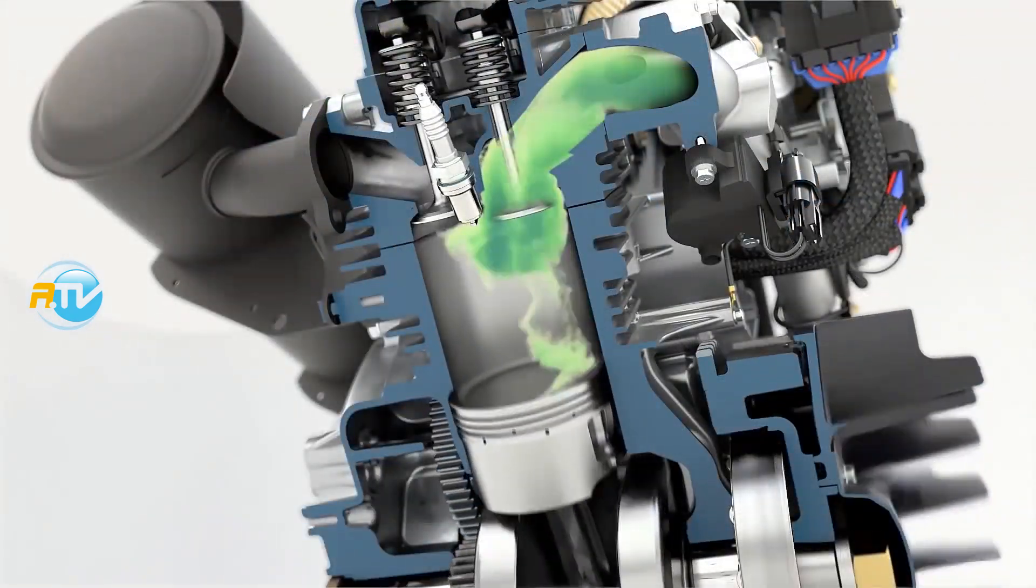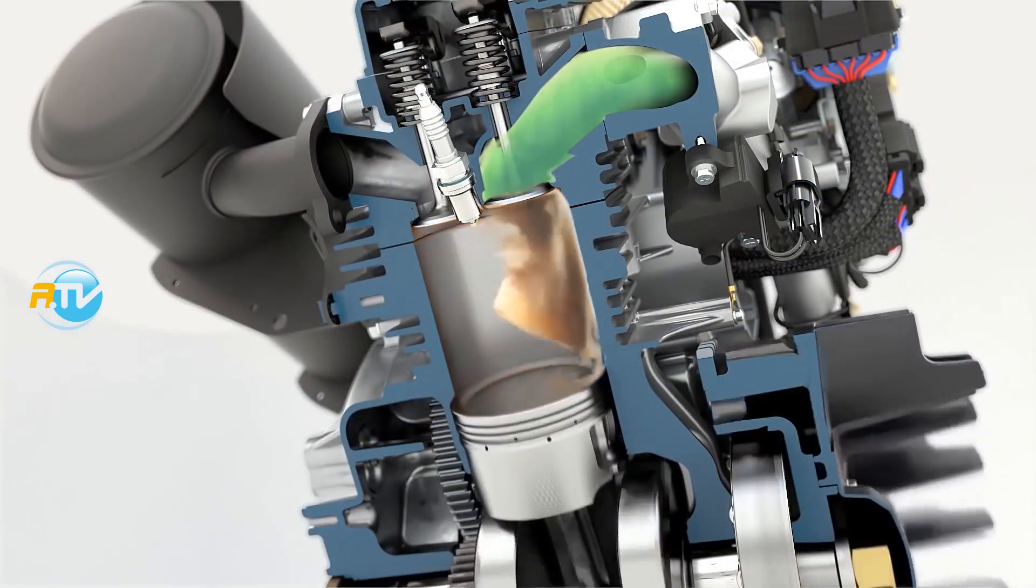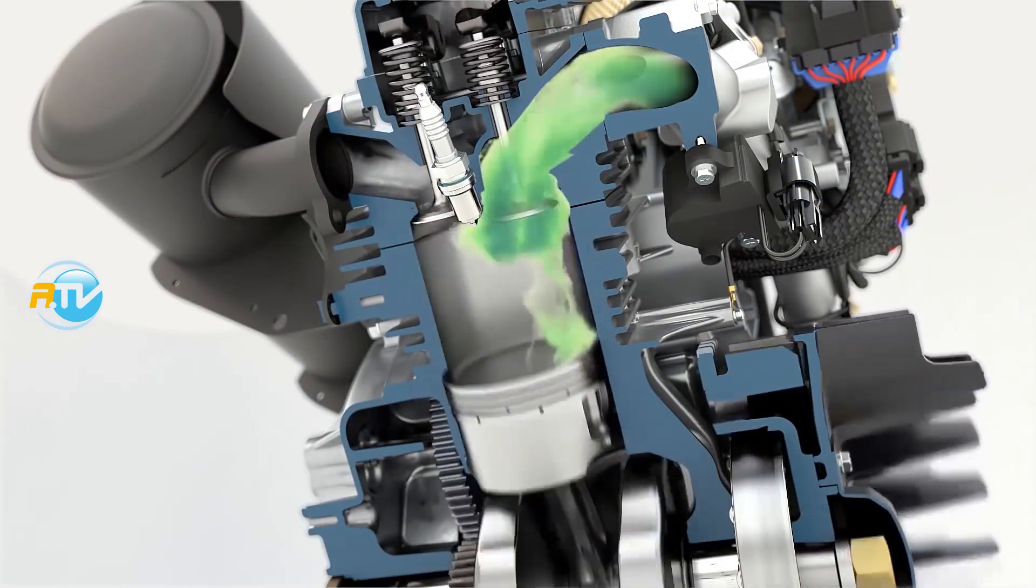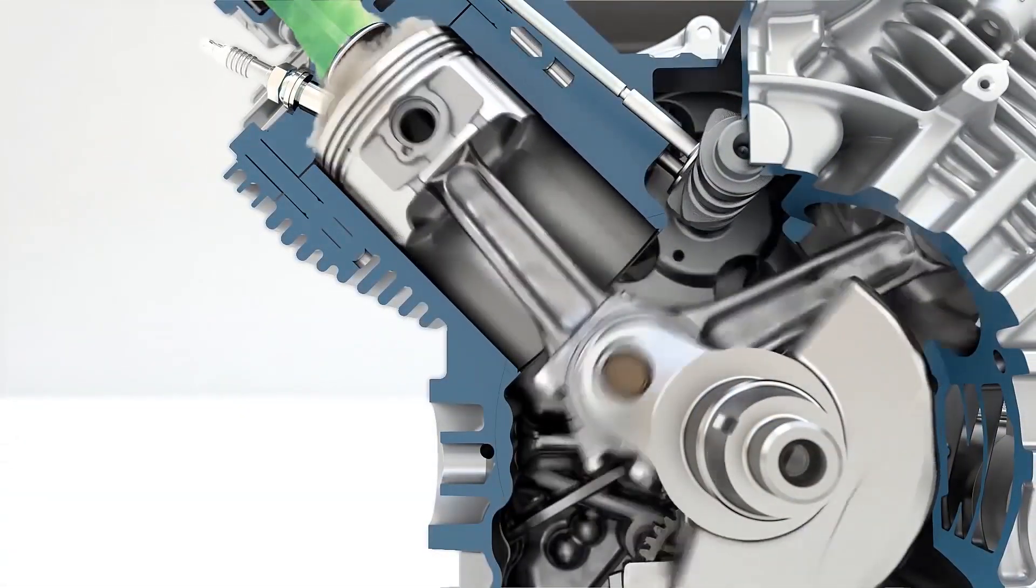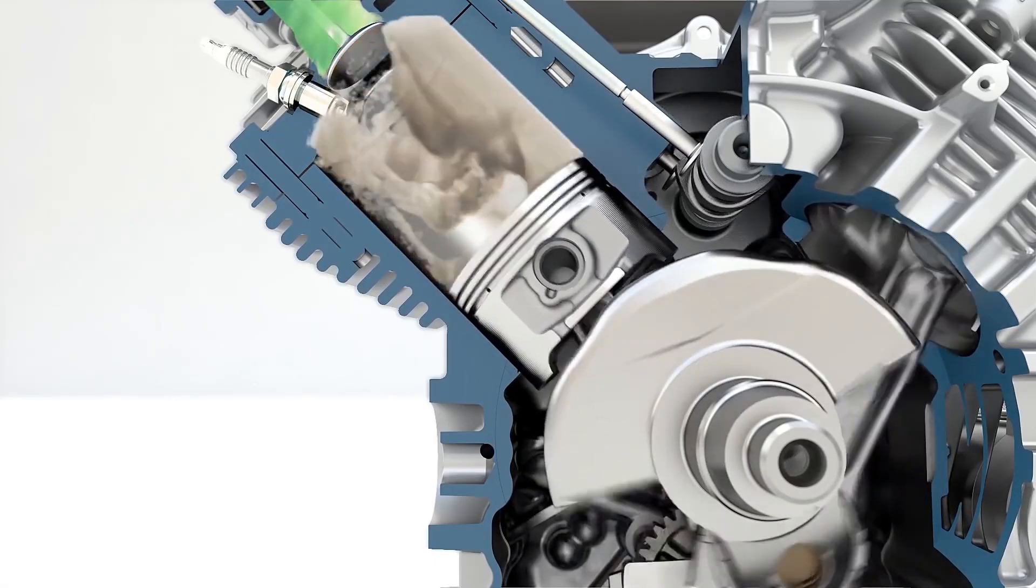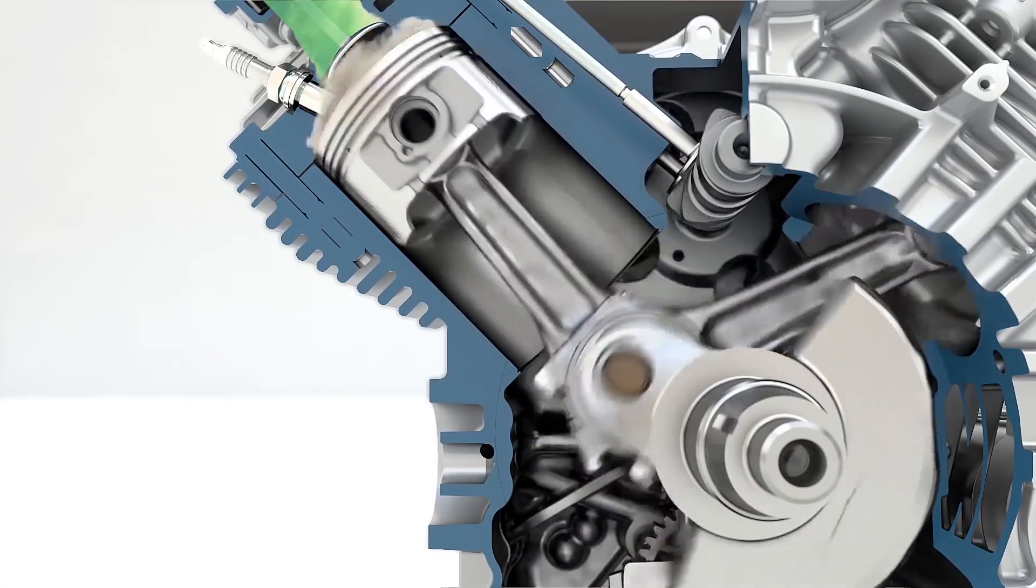The quicker the piston rises, if I want the pressure to be in the cylinder when and where I want it, I have to advance the ignition. The faster the engine is spinning, the more I'll have to advance the ignition. The slower it is spinning, I can retard the ignition more.